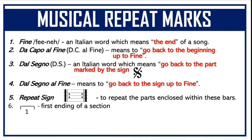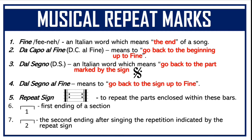This symbol indicates the first ending of a section, and this symbol indicates the second ending after singing the repetition indicated by the repeat sign. For repeat marks number 6 and number 7, they come with a repeat sign within those symbols. Now, remember all of these repeat marks because we are going to use them in our examples.